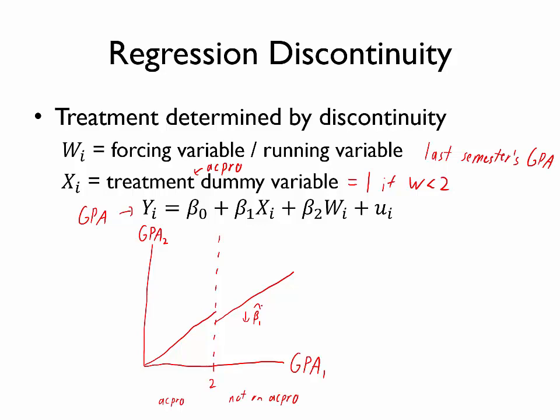We're going to attribute the vertical jump on that graph to the causal effect of the treatment. In other words, we are comparing those just above versus just below the treatment and associating just that specific difference with the effect of the treatment, in this case academic probation.